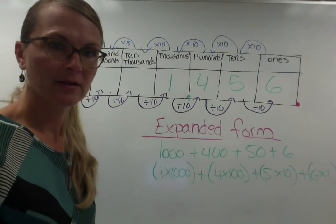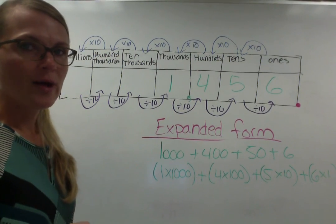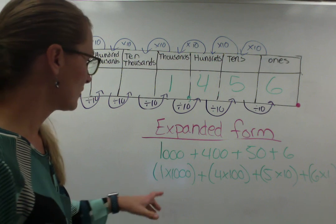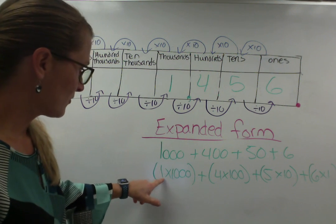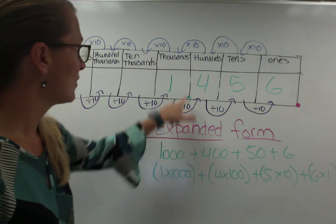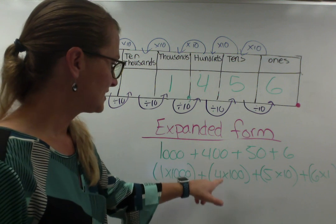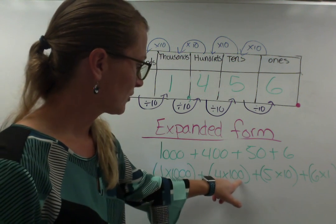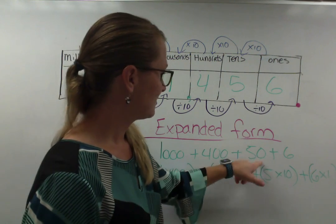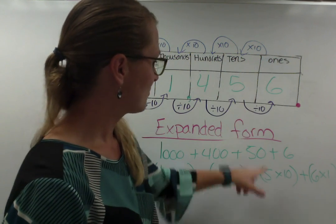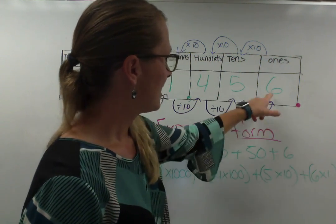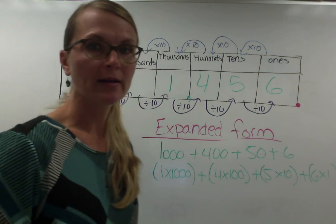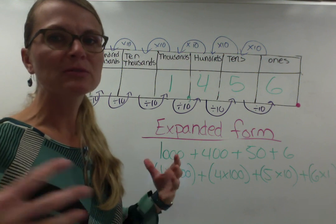So it seems a little bit more complicated, but again, we're just pulling the numbers apart. Why is this 1000? Because we have one in the thousands place. So we have one group of 1000. Why is this 400? Because we have four in the hundreds place, which is four groups of 100. Why is this 50? Because we have five in the tens place. So we have five groups of 10. And why is this six? Because we have a six in the ones place. We have six groups of one. So we're literally just taking numbers and pulling them apart.